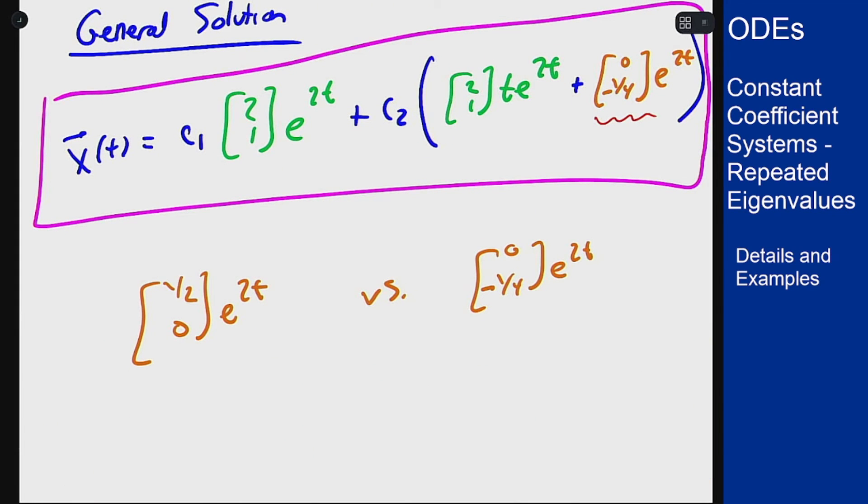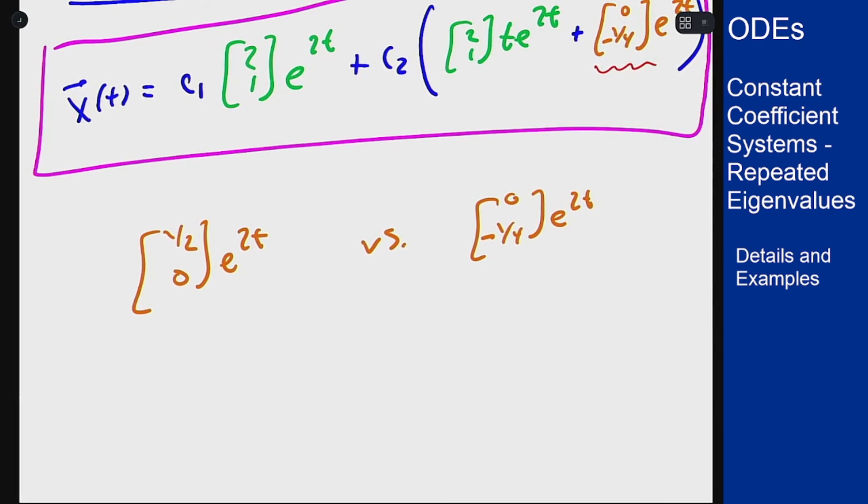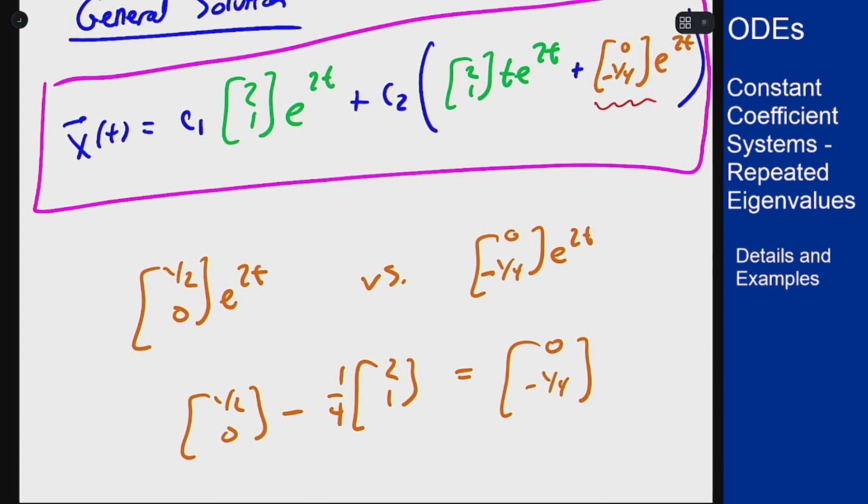But what's the difference here? Well, it turns out the difference here is actually a multiple of this first solution. So if I take [1/2; 0] and subtract 1/4 of the eigenvector [2; 1], I actually get [0; -1/4]. So what that means is the difference between this solution we found earlier is just that I've moved some copies of this into this orange term over here.